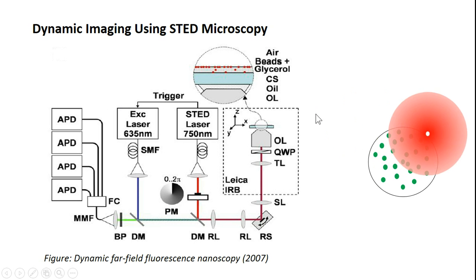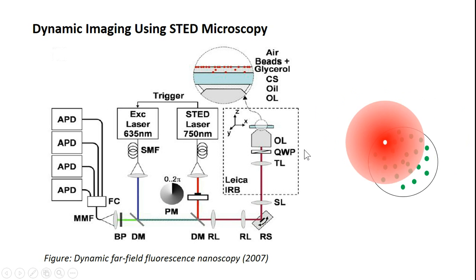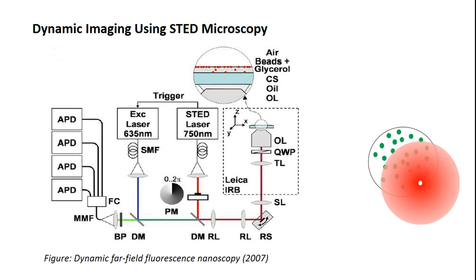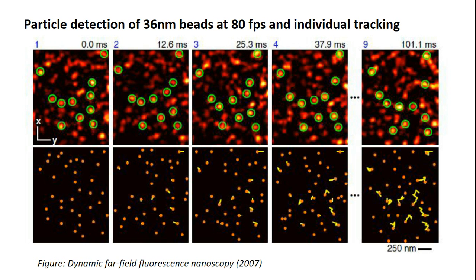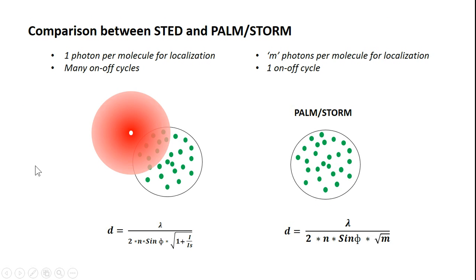We can see how a sample is scanned using STED microscopy, and an example shows how individual particles are located. The yellow lines represent particle tracking, and these particles are 36 nanometers in diameter — demonstrating the advantage of super resolution STED microscopy.